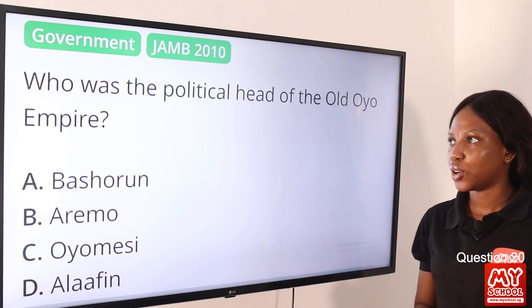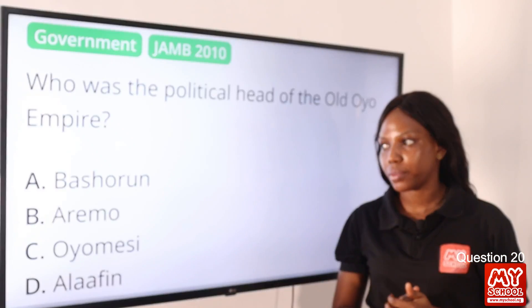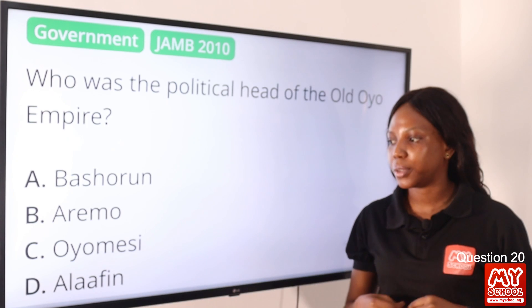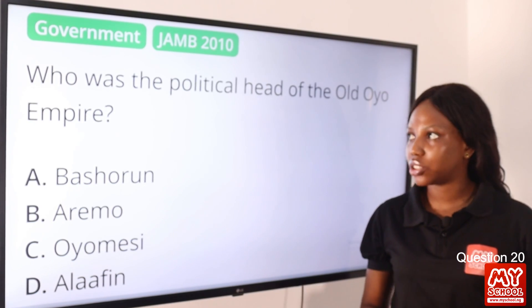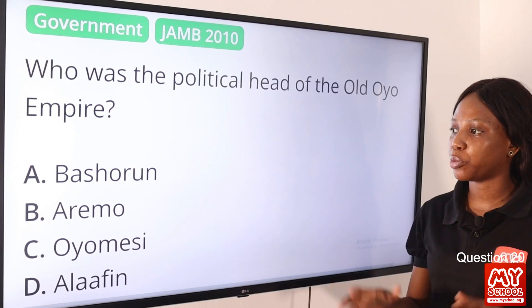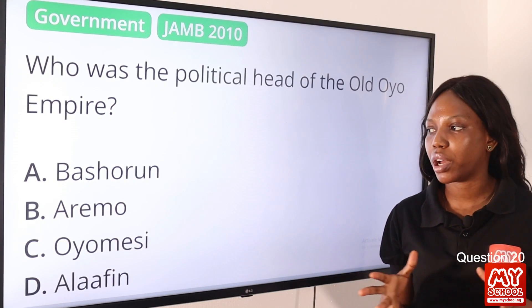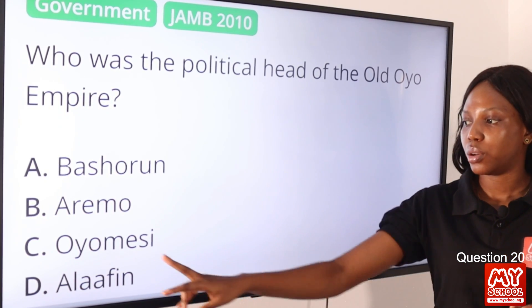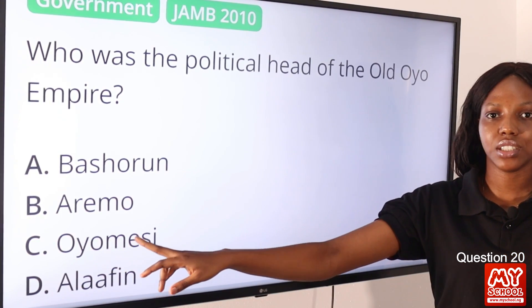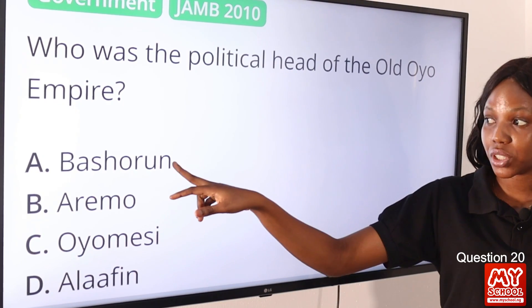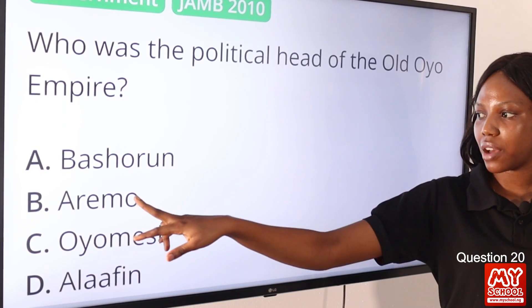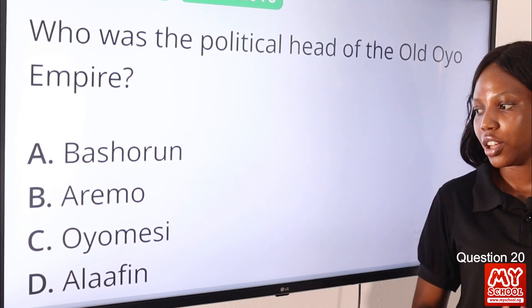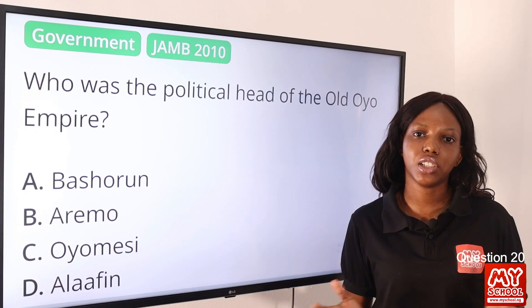Question 20: Who was the political heir of the old Oyo Empire? Option A, Bashorun; option B, Aremo; option C, Oyo Mesi; option D, Alafin. The answer is Alafin, regarded as the political heir of the old Oyo Empire. Bashorun is the leader of the king-makers, which is Oyo Mesi. Oyo Mesi is the seven king-makers with Bashorun serving as their head. Aremo was the eldest son of the ruling Alafin. So the answer is option D, Alafin.